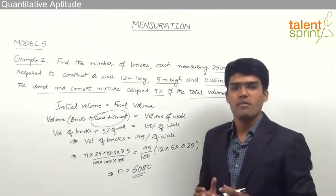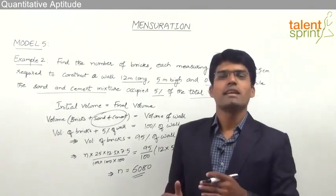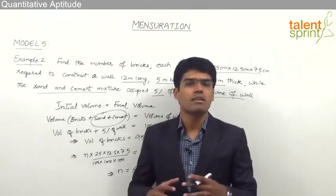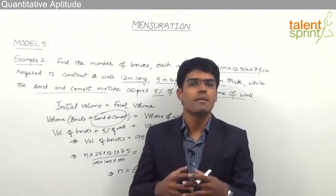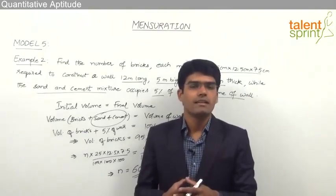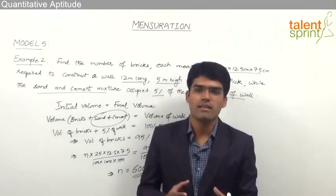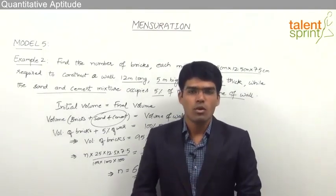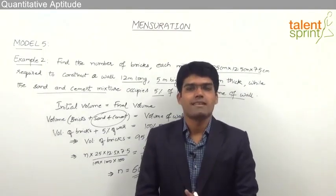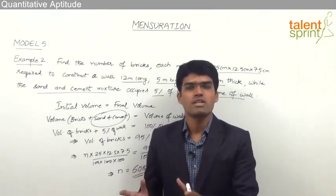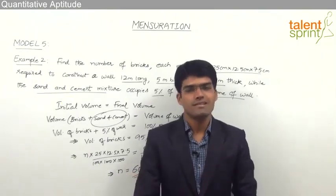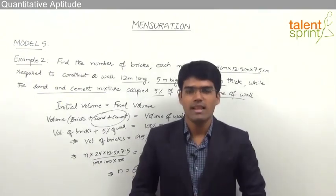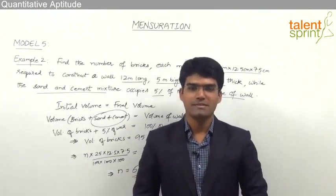Whenever two types of solids or a number of solids come together to form another solid, we always use the principle that volume is constant — total initial volume equals total final volume — and the required answer can be obtained.